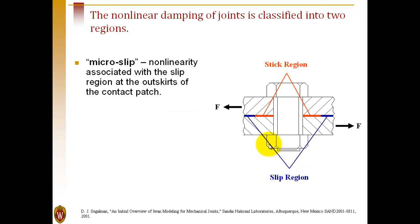Damping can be classified in two different regions, and the kind that we are most interested in is micro-slip. A bolted joint is clamped together, and that clamping force provides a region that always stays stuck.